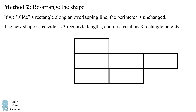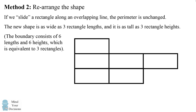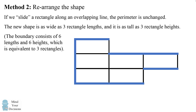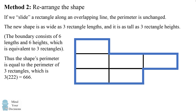The new shape is as wide as three rectangle lengths and it is as tall as three rectangle heights. So we can count this will have the perimeter of three rectangles. Alternately, we can see that the boundary consists of six different lengths — 1, 2, 3, 4, 5, and 6 — and it consists of six different heights: 1, 2, 3, 4, 5, 6. So again, this is equivalent to three rectangles. Therefore, the shape's perimeter is equal to the perimeter of three rectangles, which is 3 times 222, which equals 666.